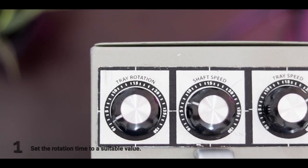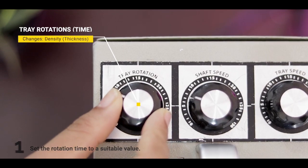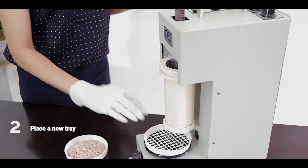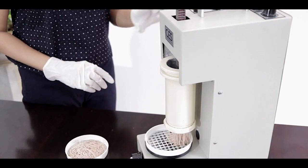Making string hoppers with the auto button. First, set the tray rotation knob to a suitable low value to control the pressing time. Now, place a tray and press the auto button once to make one string hopper.